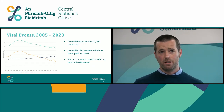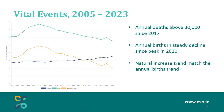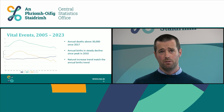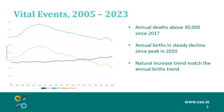This line chart tracks vital events from 2005 to 2023. The blue line is the annual deaths, the green line is the annual births, and the yellow line is the natural increase, which is the number of births minus the number of deaths. Focusing initially on deaths, you can see from the chart that annual deaths went above 30,000 people in 2017 and have continued upwards since then.